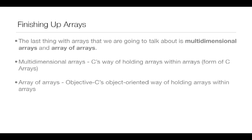We're going to be finishing up talking about arrays for the most part in this lesson. We'll still touch on some things from time to time, but the last thing we're going to be going over is multi-dimensional arrays and array-of-arrays. Multi-dimensional arrays are C's way of holding arrays within arrays, and array-of-arrays is Objective-C's object-oriented way of holding arrays within arrays. We're going to be going over each type in the lesson and then in code.